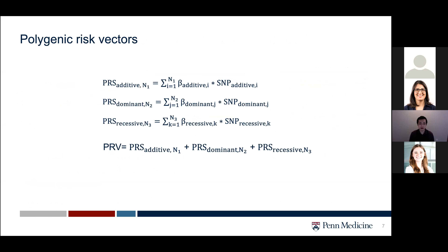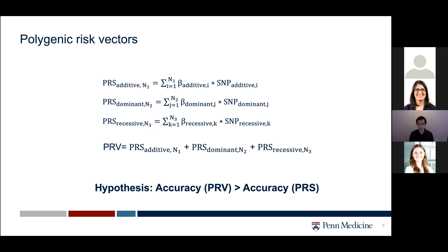That's why we thought about a simple improvement to PRS: polygenic risk vectors, or PRV. In PRV, we similarly perform a PRS analysis — generating a PRS under the additive, dominant, and recessive models — and then simply add them together to give a final score. Our hypothesis is that the accuracy of the PRV is higher than that of the PRS because it contains more information beyond just the additive effect.